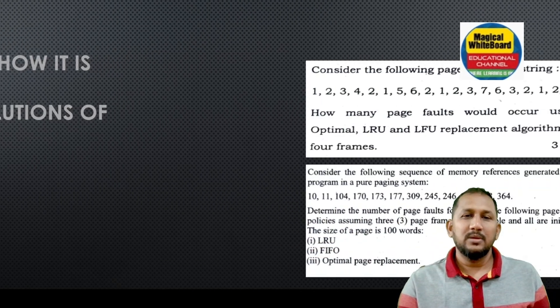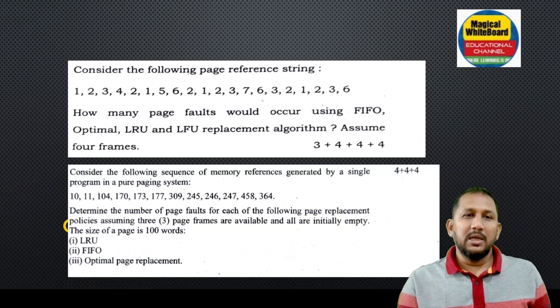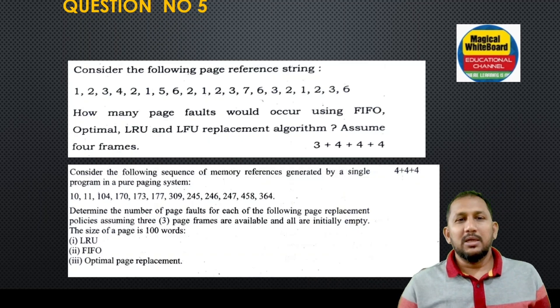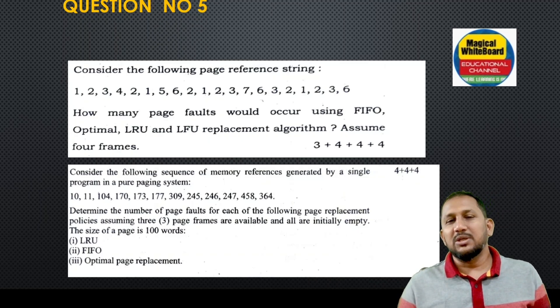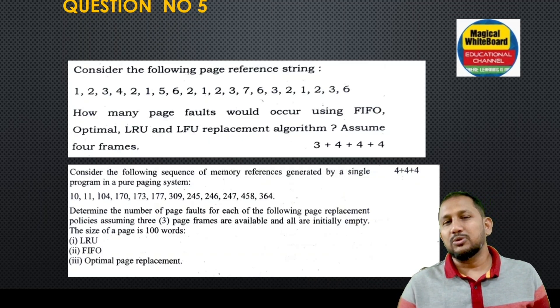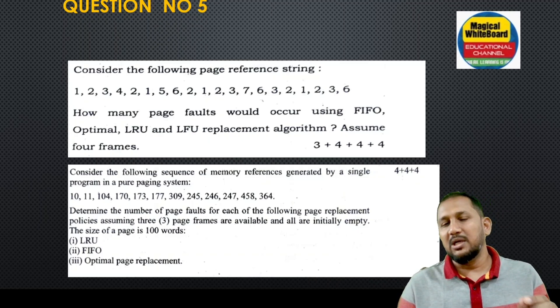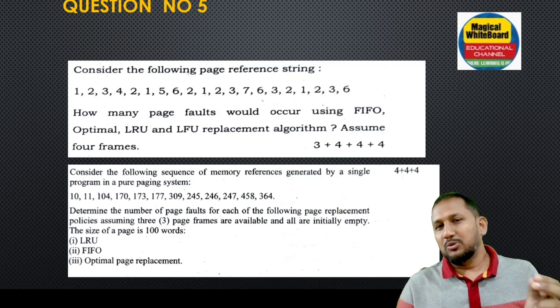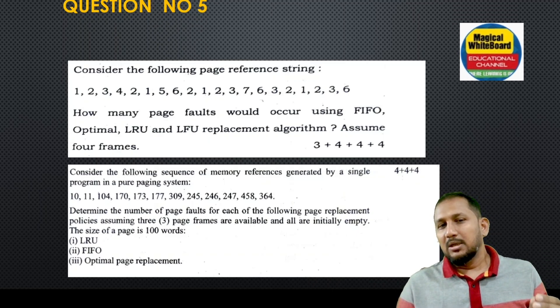Explain Peterson's solution for the critical section. Peterson's solution is a critical section algorithm — explain how it solves the problem. Next, question number five: a mathematical problem — a page reference string is given.